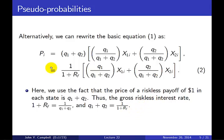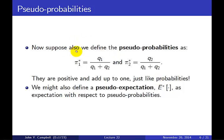Going back to the main equation, when we multiply by q1 plus q2 that's the same as dividing by 1 plus rf, or multiplying by 1 over 1 plus rf. We then have the terms in brackets: q1 over (q1 plus q2) and q2 over (q1 plus q2). We define our pseudo probabilities pi-star 1 and pi-star 2 as q1 divided by the sum of the q's and q2 divided by the sum of the q's. These ratios are positive and they add up to 1, just like probabilities.